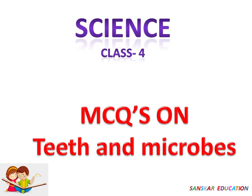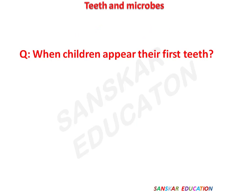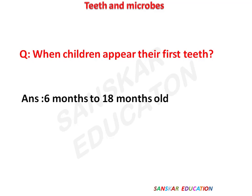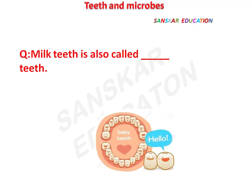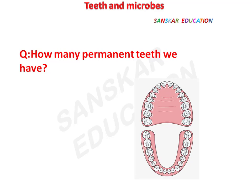In this video we will see science MCQs class 4, useful for all competitive exams. Topic is teeth and microbes. Question: when do children appear their first teeth? Answer: six months to 18 months old. Milk teeth are also called temporary teeth. How many permanent teeth do we have? Answer: 32 teeth.